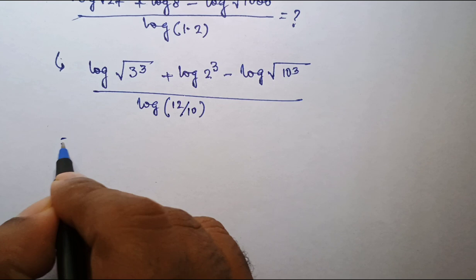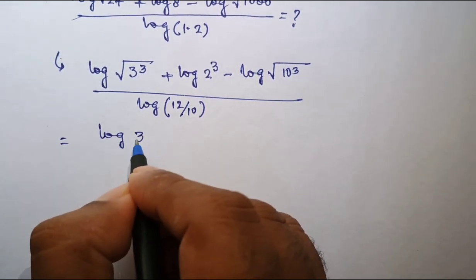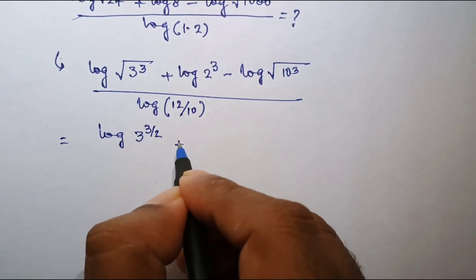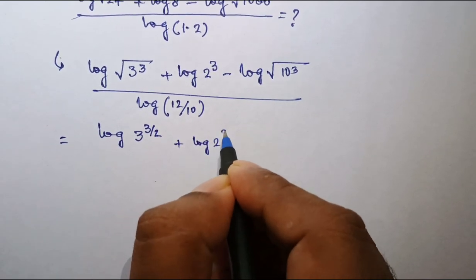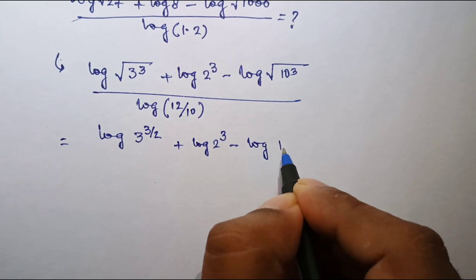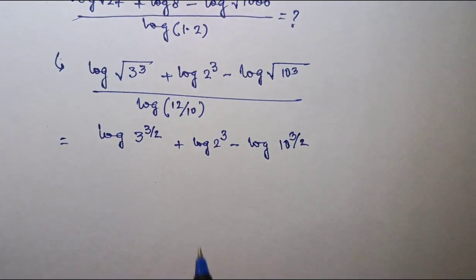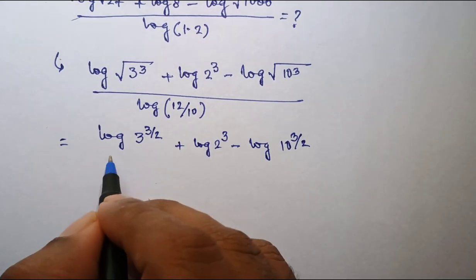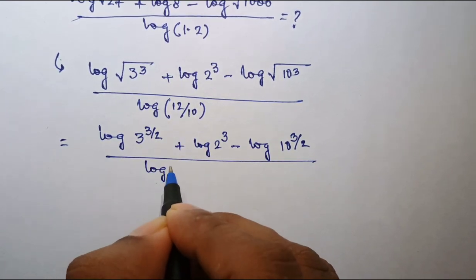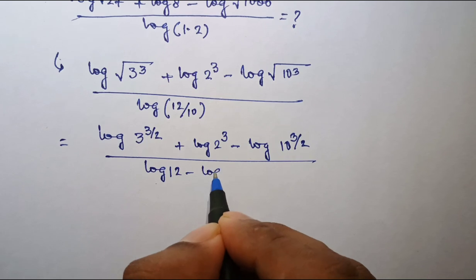That is equal to log of 3 to the power 3 by 2, plus log of 2 to the power 3, minus log of 10 to the power 3 by 2, whole divided by log of a by b, which is log a minus log b — that is log 12 minus log 10.